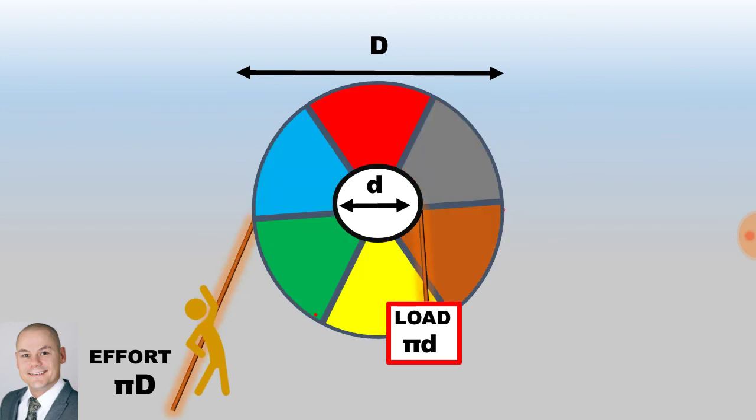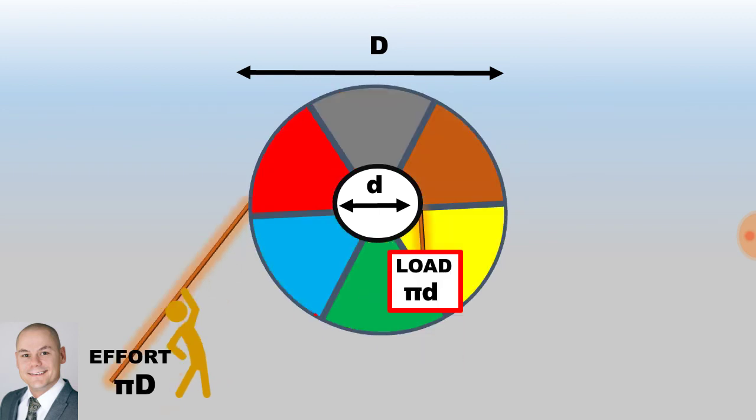Now as we pull up this load slowly we will require some amount of effort in order to pull up the load. Let's assume that the diameter of the bigger wheel is 75 centimeters and the diameter of the smaller wheel is 15 centimeters. Let's assume that the load being picked up is 50 kilograms and the effort being applied is 140 newtons.